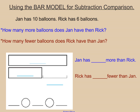Let's read it together. Jan has 10 balloons. Rick has 6 balloons. How many more balloons does Jan have than Rick? How many fewer balloons does Rick have than Jan?